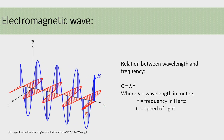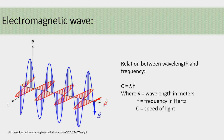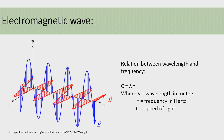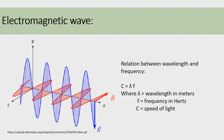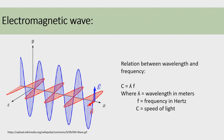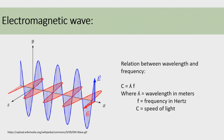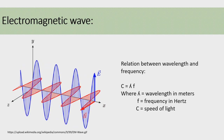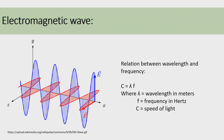The blue wave shows the electric field, whereas the red wave shows the magnetic field. The electric field and magnetic field are perpendicular to each other, and the direction of propagation of the wave is perpendicular to both electric and magnetic fields. In this image, the direction of propagation is X, the direction of electric field is Y, and the direction of magnetic field is Z.